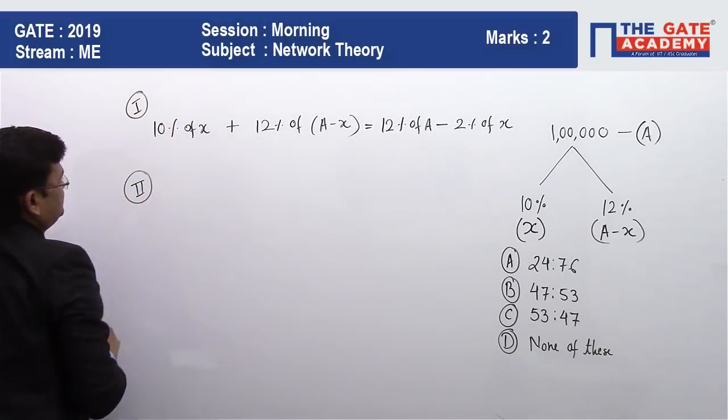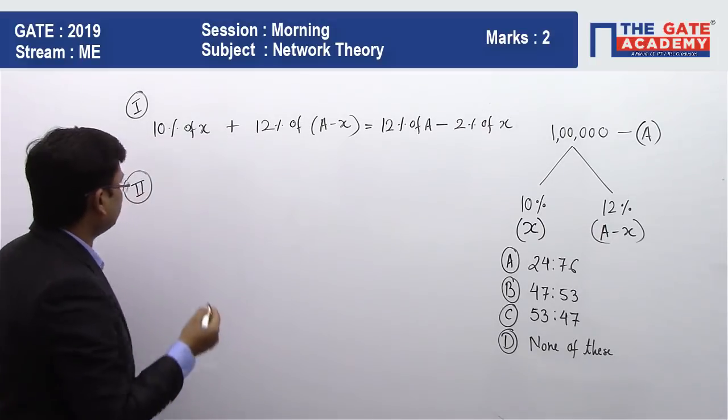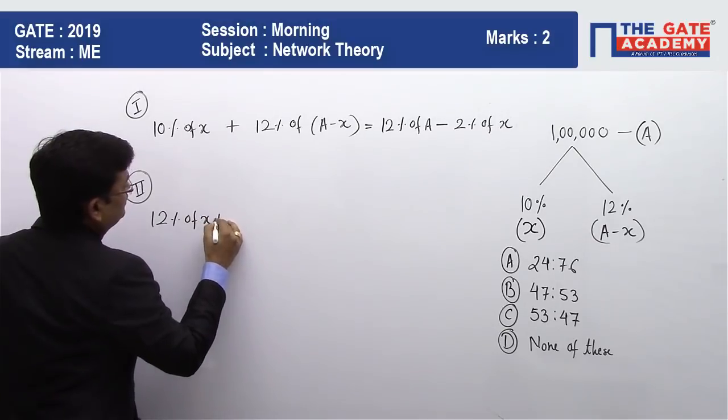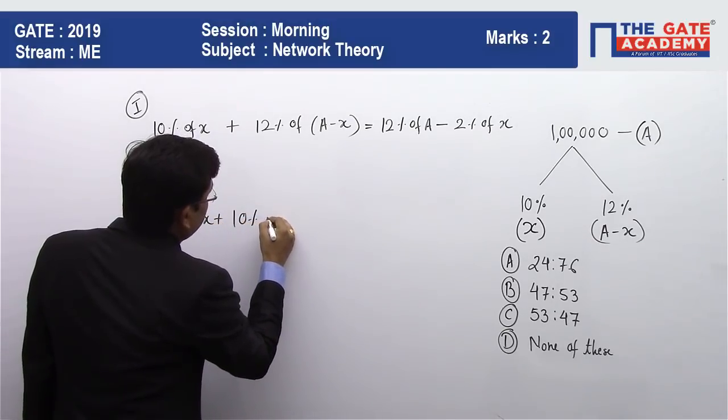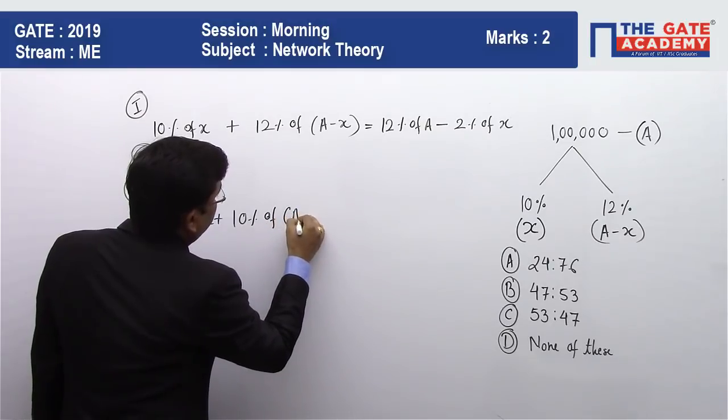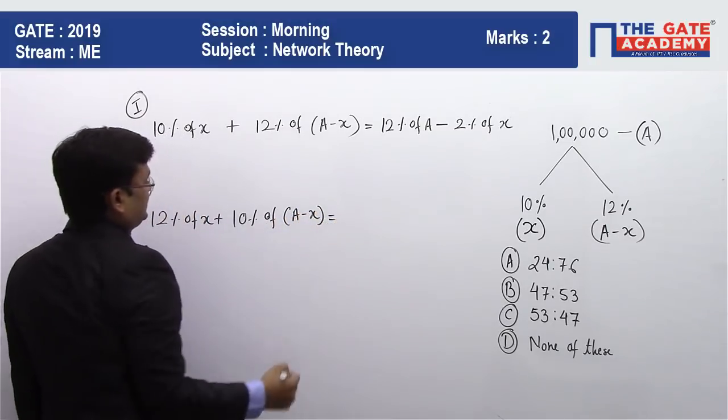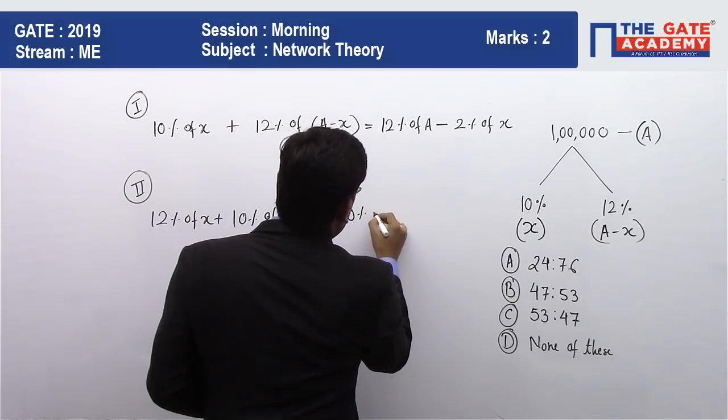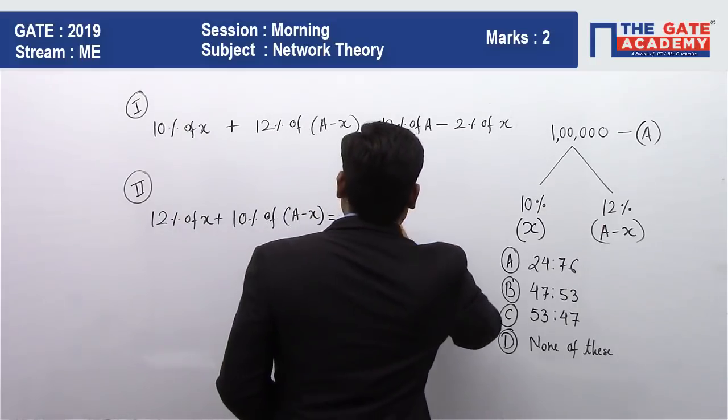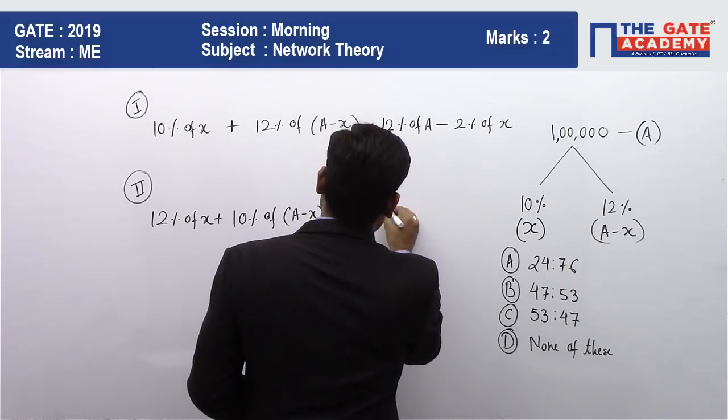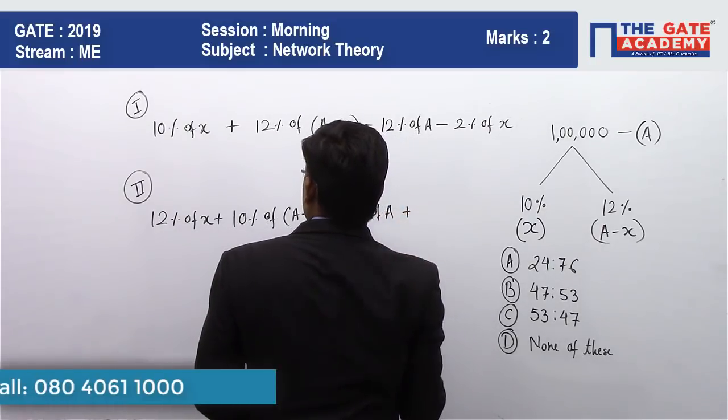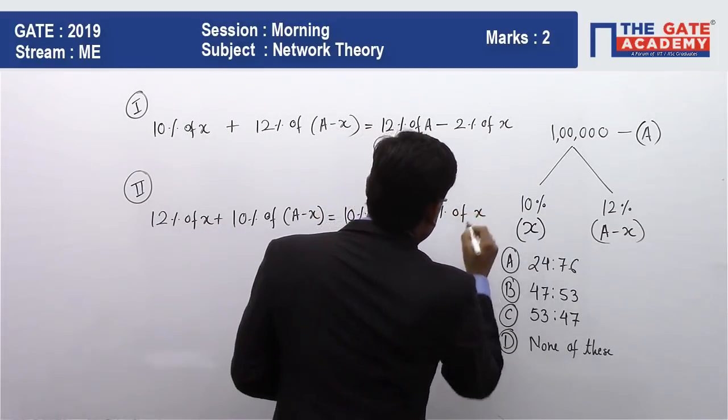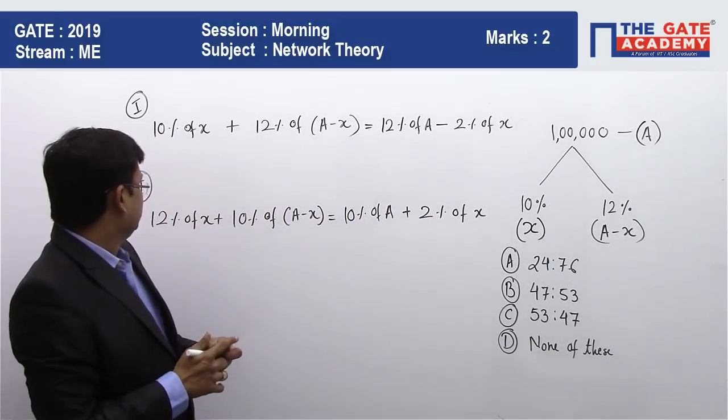In case 2, the profits get interchanged. So we have 12% of x plus 10% of (A minus x). If we simplify this, we get 10% of A plus 2% of x. This is case 2.